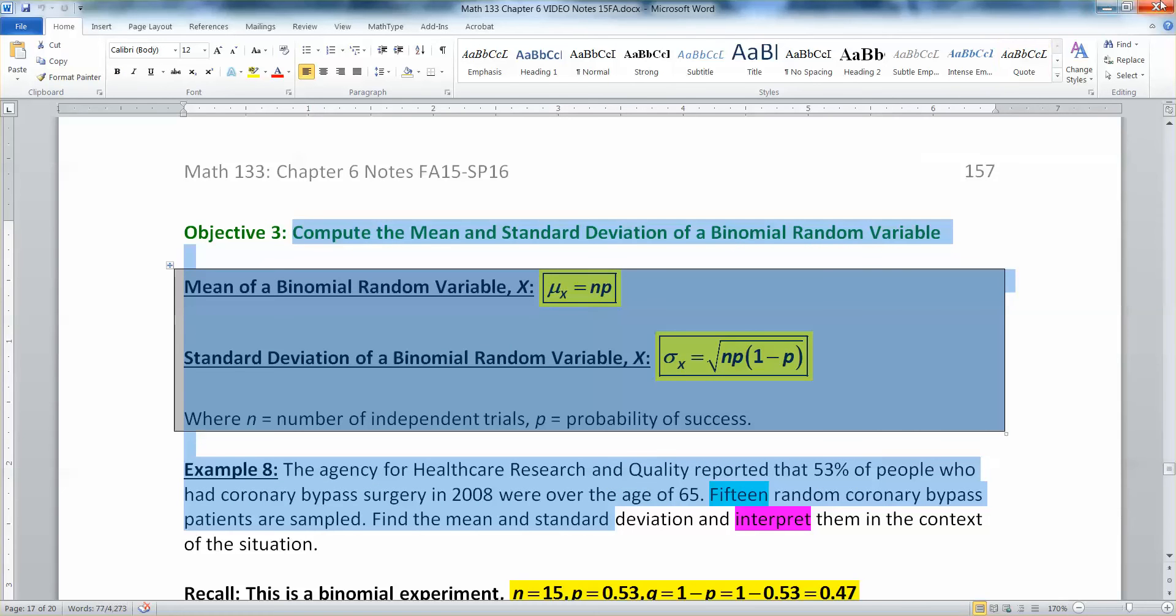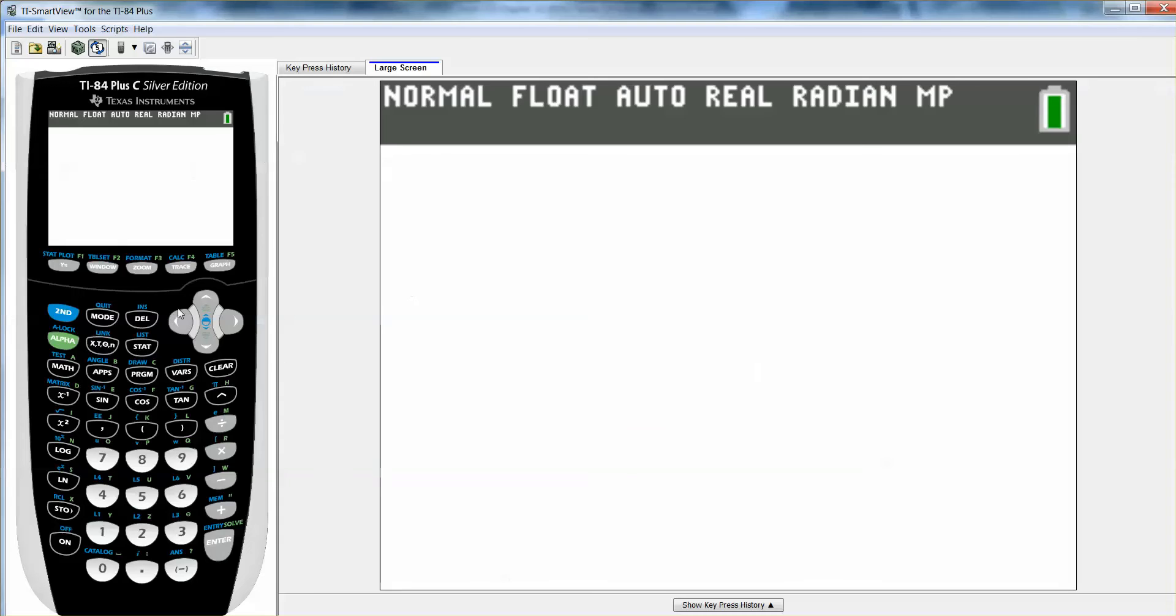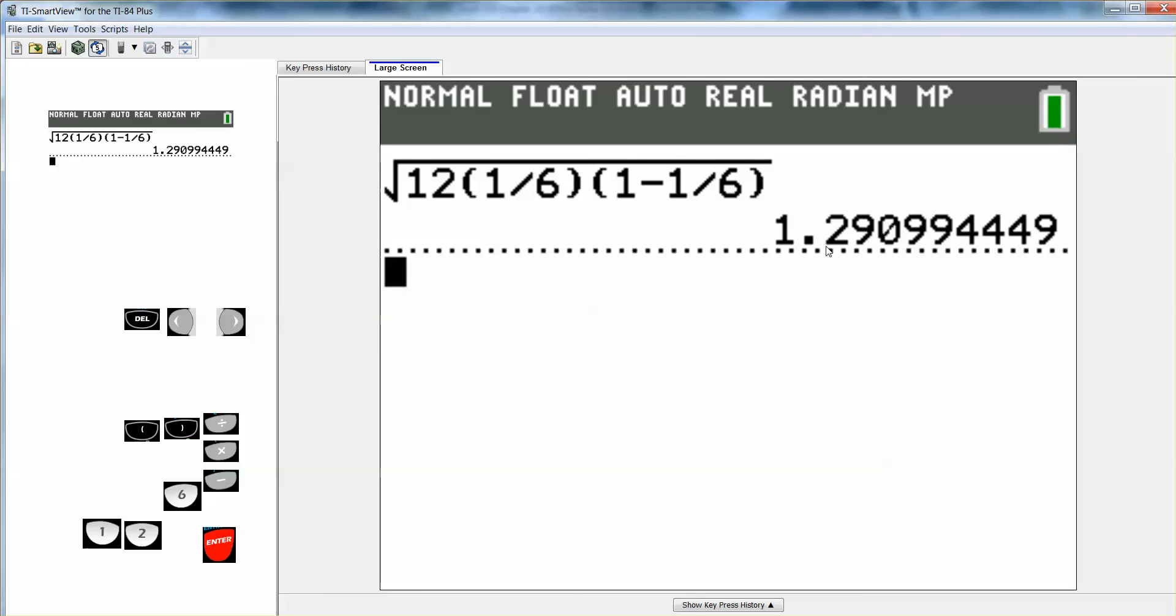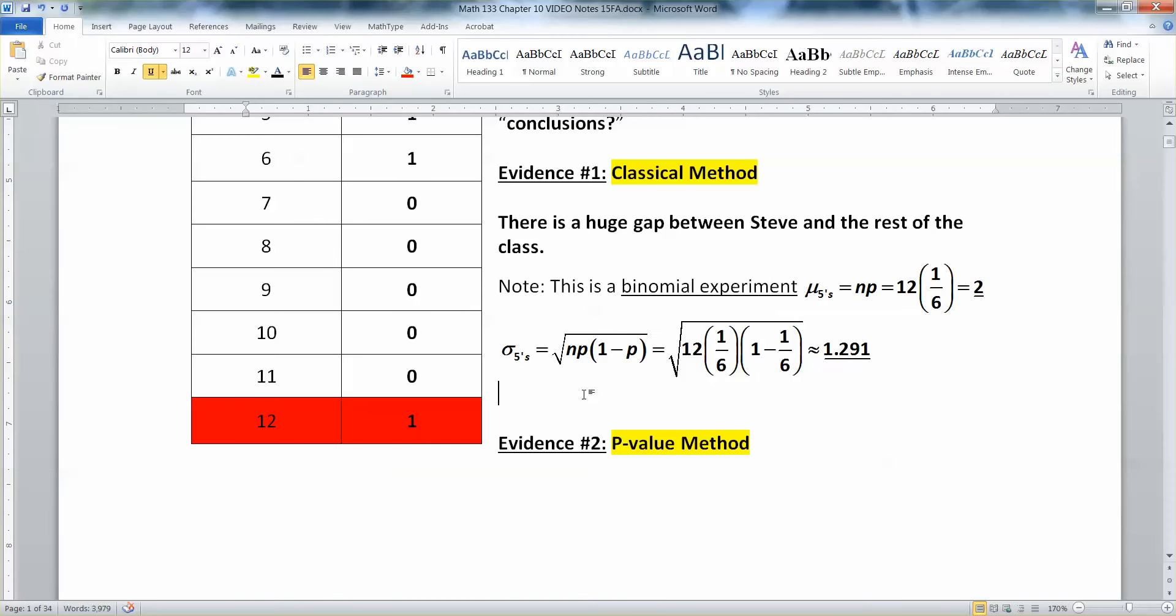So real quick, let me prove a couple of things to you. One, this is binomial. There's the mean and standard deviation formulas from the binomial random variable. These notes are from section 6.2. So it's been a while. So let me close that. And then let me prove to you that it's 1.291.